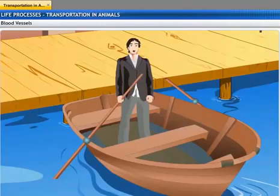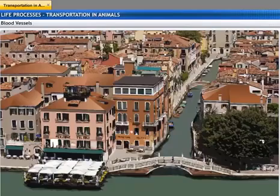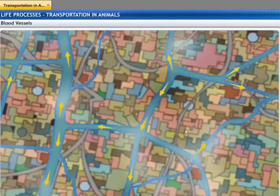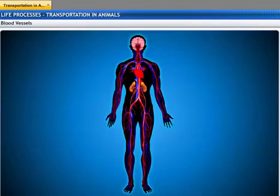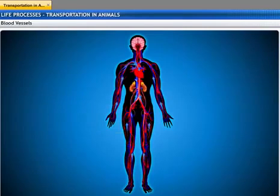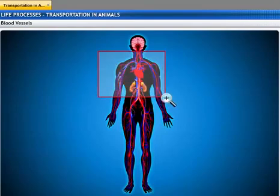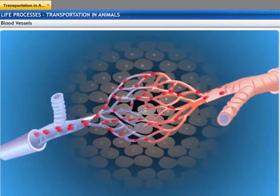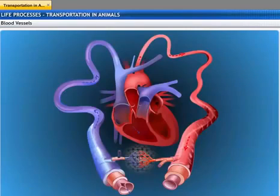The city of Venice has an extensive network of waterways that allow boats to move around freely. Similarly, blood is transported from one part of the body to another through an intricate network of tubes called blood vessels. Blood needs to be pumped through the blood vessels for it to reach each and every tissue in the body. This function of pumping is carried out by the heart.